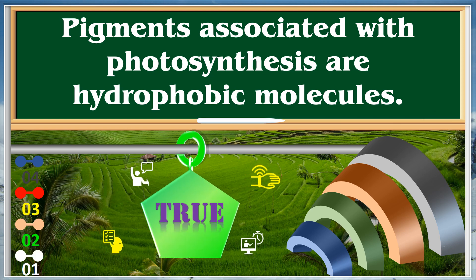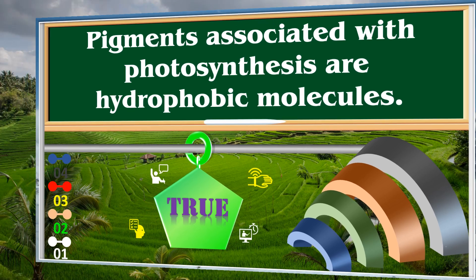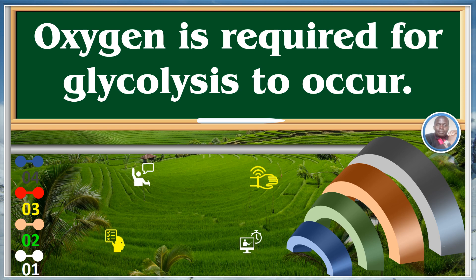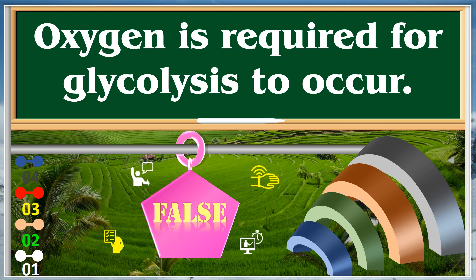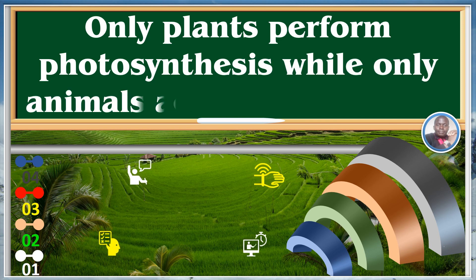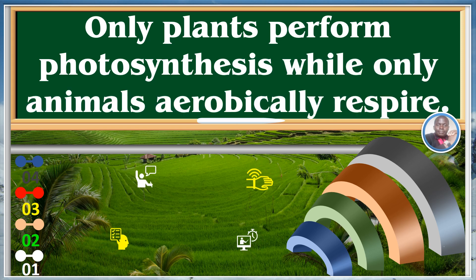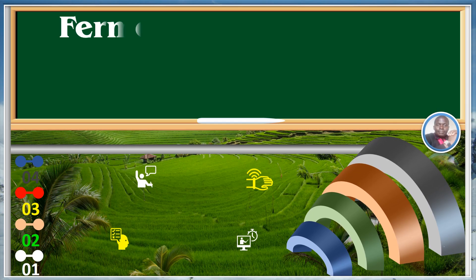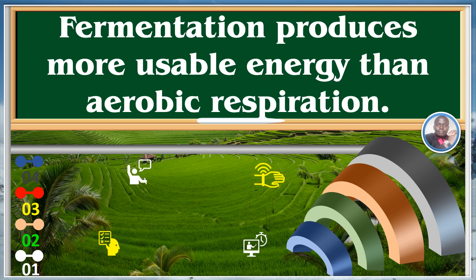Oxygen is required for glycolysis to occur. True. Plants perform photosynthesis while only animals aerobically respire. False. Fermentation produces more usable energy than aerobic respiration. False.